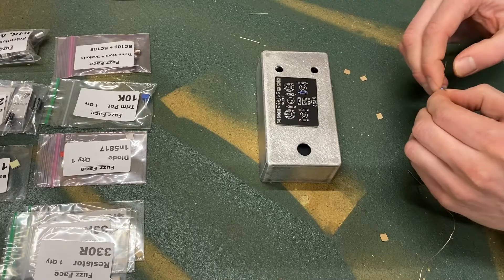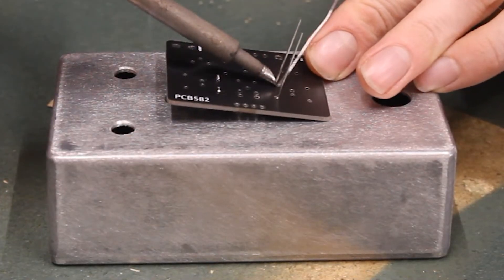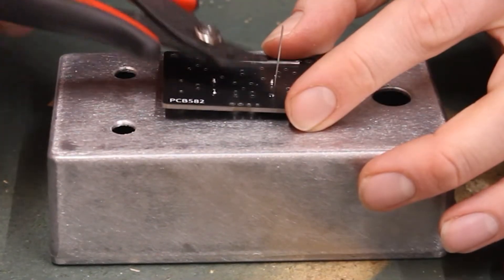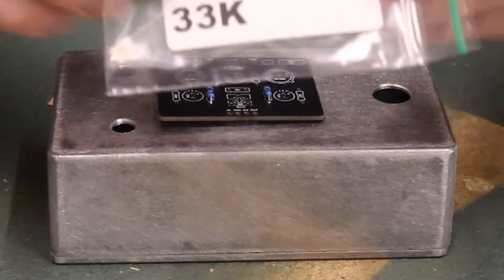Now grab the 1 megaohm resistor and do the same thing. Insert it into the 1M spot on the PCB. Continue following the same pattern with the rest of the resistors until you have soldered them all onto the PCB.